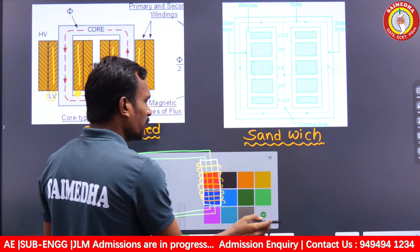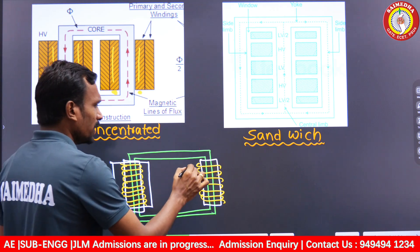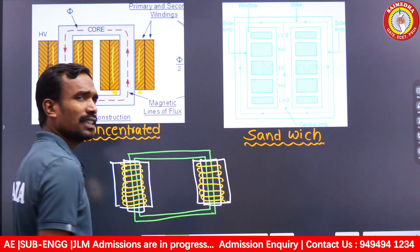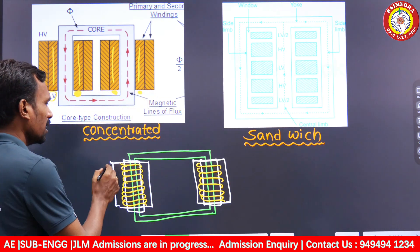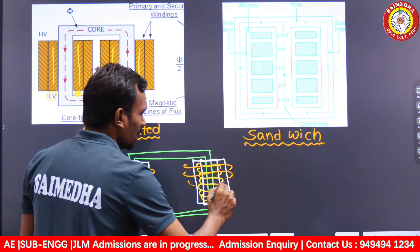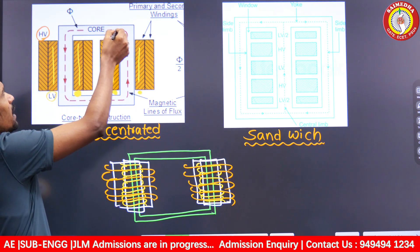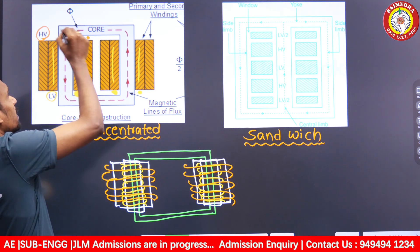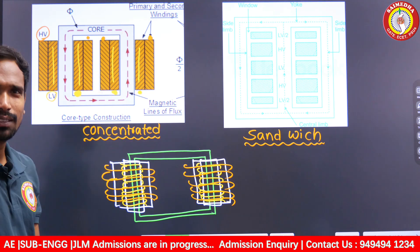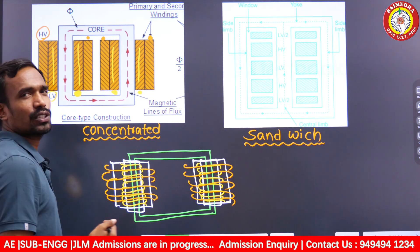On top of the LV winding, we again place insulation. After the insulation, we place the HV winding. So the layering sequence is: first insulation on the core, then LV winding, then insulation again, then HV winding. These are the high voltage windings placed over the insulation layer.